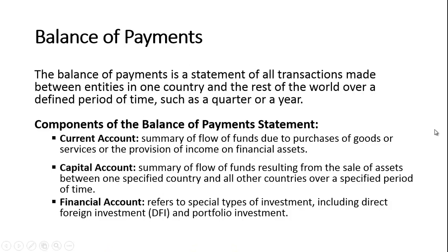I want to continue my discussion of the balance of payments. In a previous video I focused on the current account, and in this video I'm going to focus on the capital account, the financial account, and the relationship between all three. The balance of payments is a statement of all transactions made between entities in one country and the rest of the world over a defined period of time. The current account is the summary of the flow of funds due to purchases of goods or services, the provision of income or financial assets — a lot of that is due to trade, exports and imports.